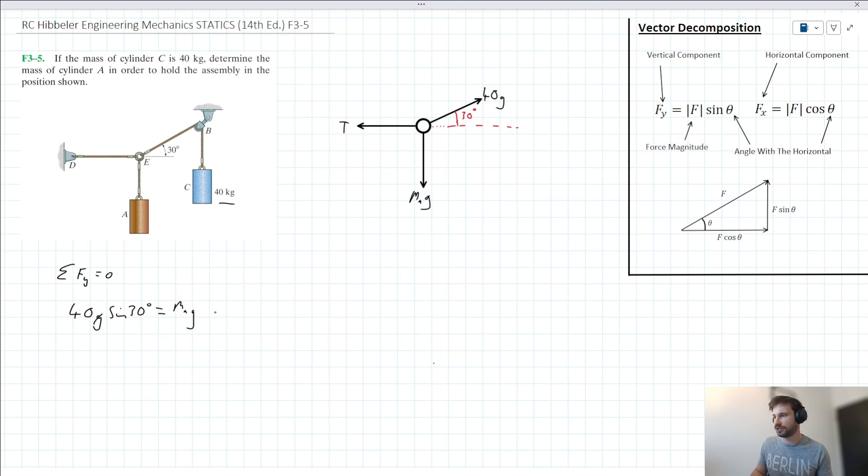Now we can cancel G's on both sides. We know then that M_A equals 40 sin 30, which when we put into our calculator gives us a value of 20. Therefore, M_A equals 20 kilograms.